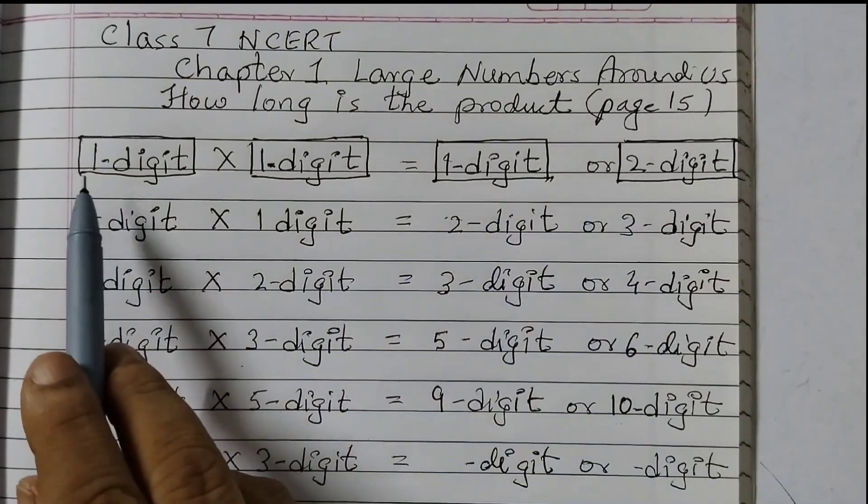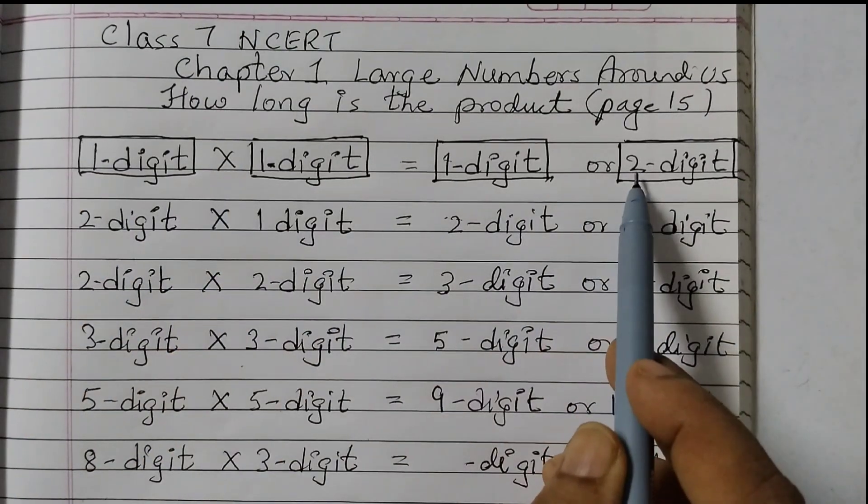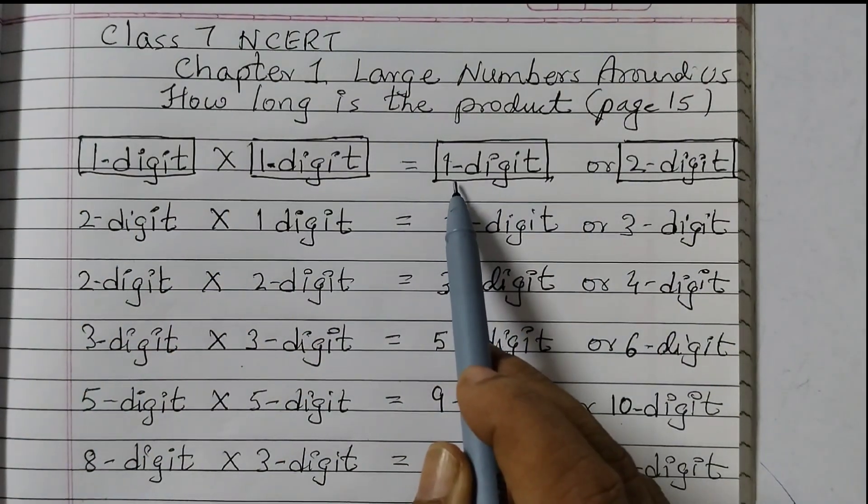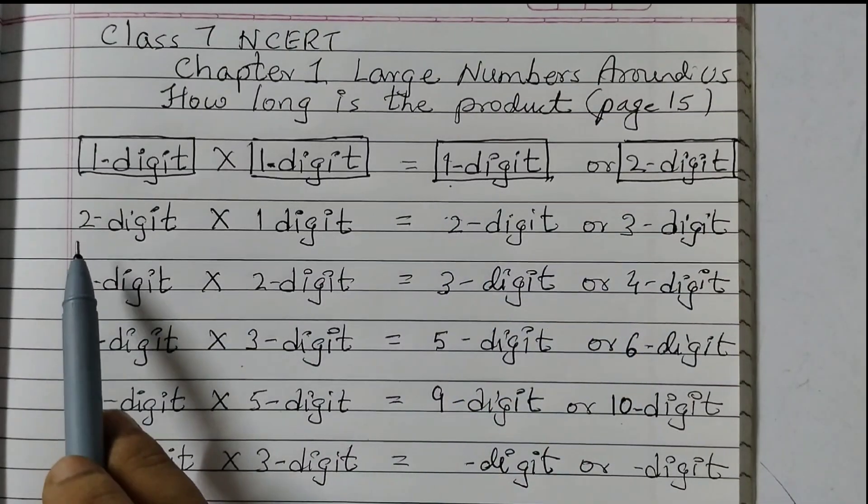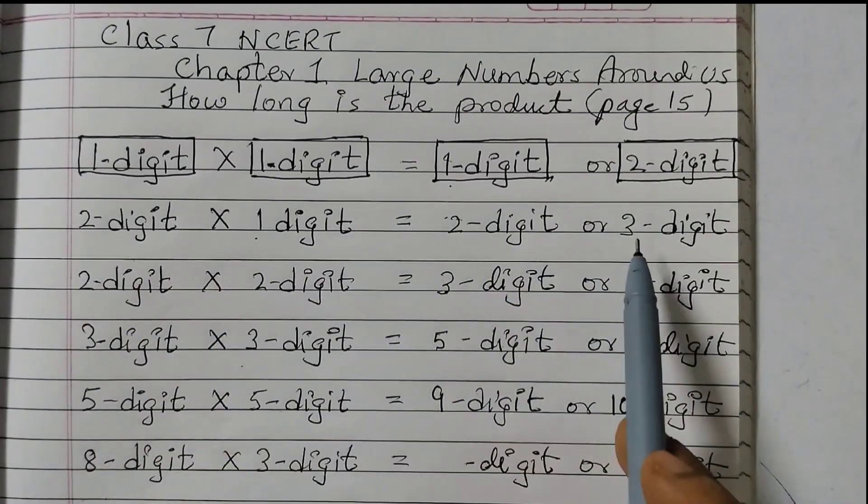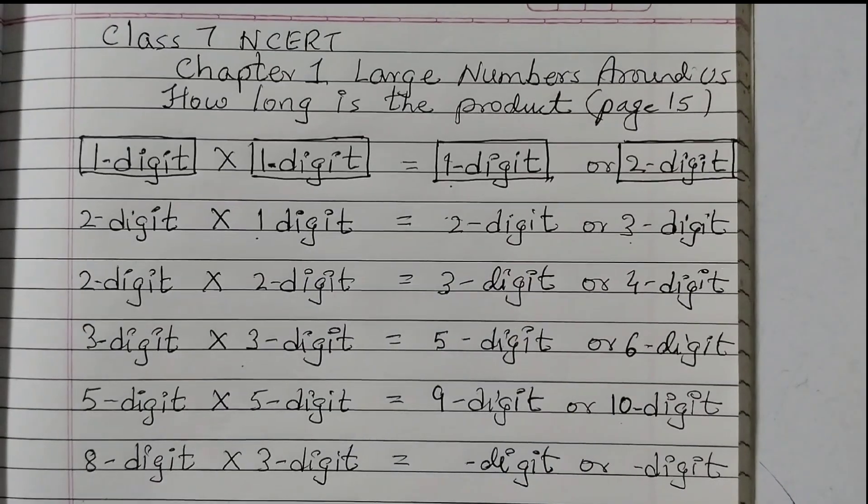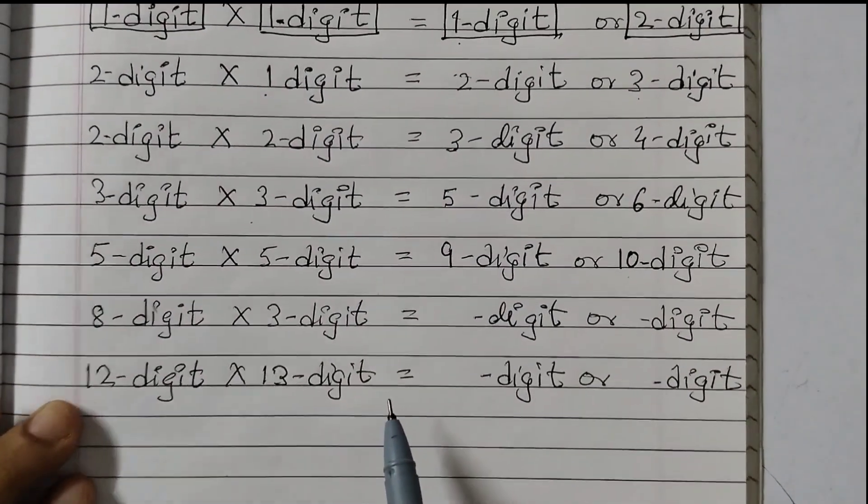Like if you are getting 2 here, 1 plus 1 is 2. And then subtract 1, we get 1. So 1 digit or 2 digit. 2 plus 1, 3. 3 or 1 less would be 2. So that is the pattern. It is a very simple pattern.